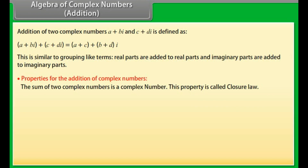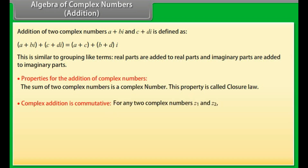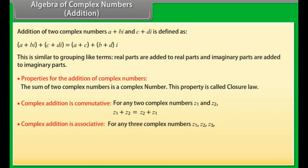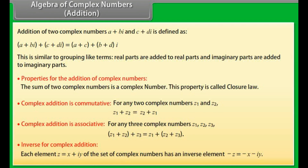Properties of the addition of complex numbers. The sum of two complex numbers is a complex number — this property is called the closure law. Complex addition is commutative: for any two complex numbers Z1 and Z2, Z1 plus Z2 equals Z2 plus Z1. Complex addition is associative: for any three complex numbers Z1, Z2, Z3, (Z1 plus Z2) plus Z3 equals Z1 plus (Z2 plus Z3). The inverse of complex addition: each element Z equal to X plus iota Y has an inverse element minus Z equal to minus X minus iota Y.